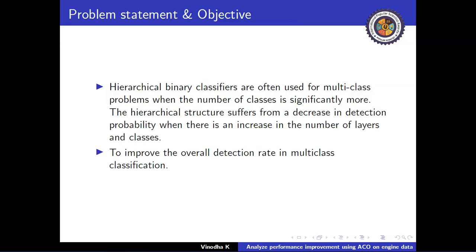For example, class 2 may have subclasses 2.1, 2.2, and 2.3. Similarly, class 3 may have 3.1, 3.2, and 3.3. Again, 3.1, 3.2, and 3.3 may be subdivided into 3.1.1, 3.1.2, 3.1.3, and so on. The ultimate aim is to find the leaf node — the last node at the hierarchical level. We refer to the major root class as level 1, its subclasses as level 2, further subdivisions as level 3, and so on.